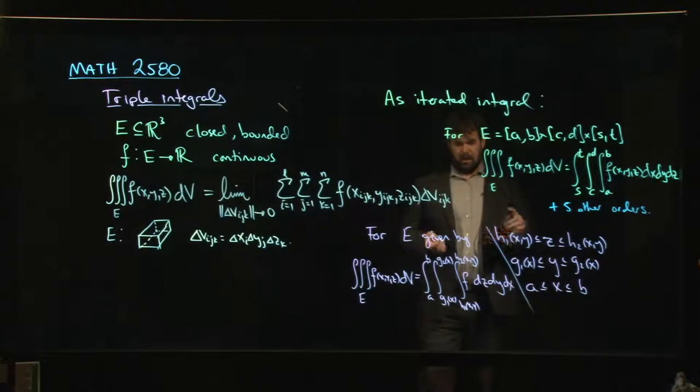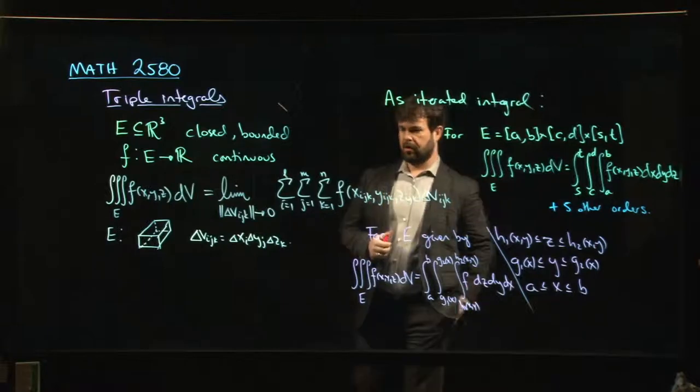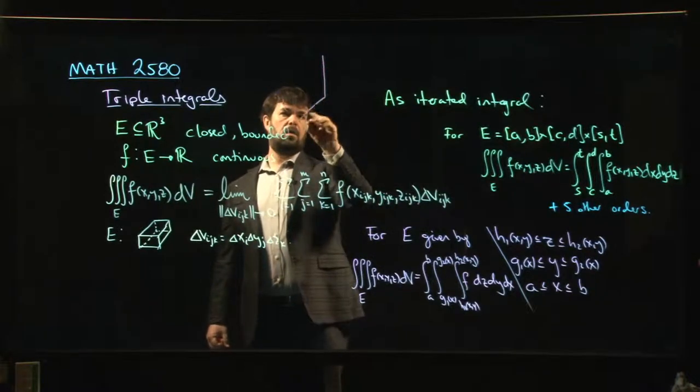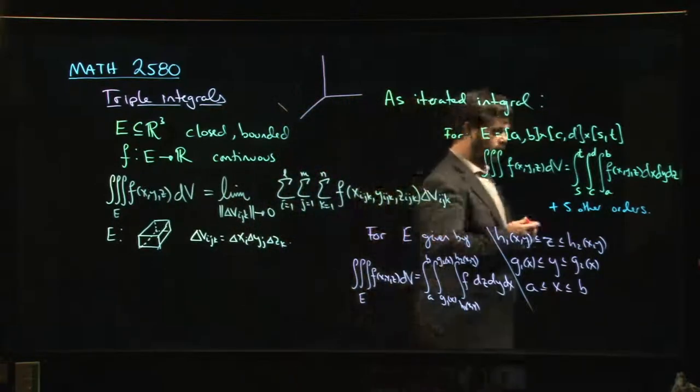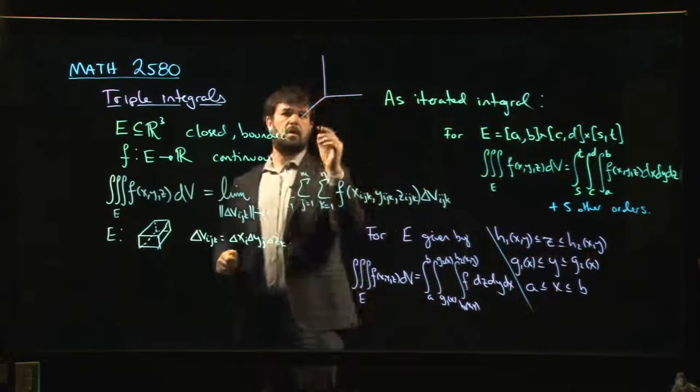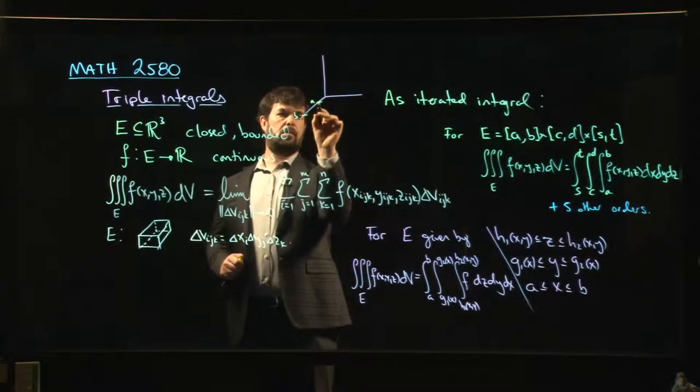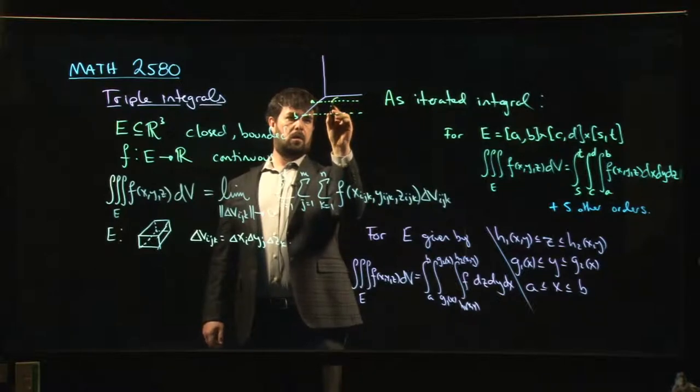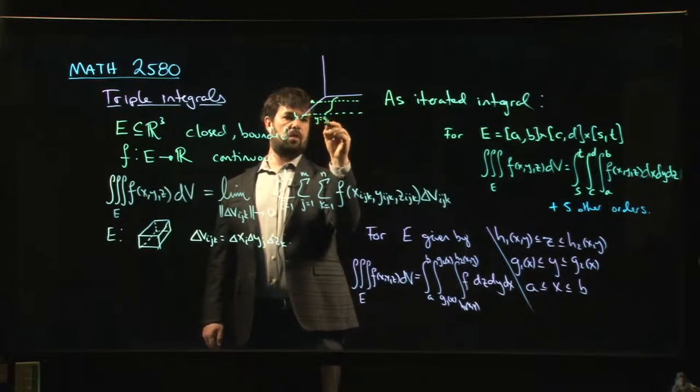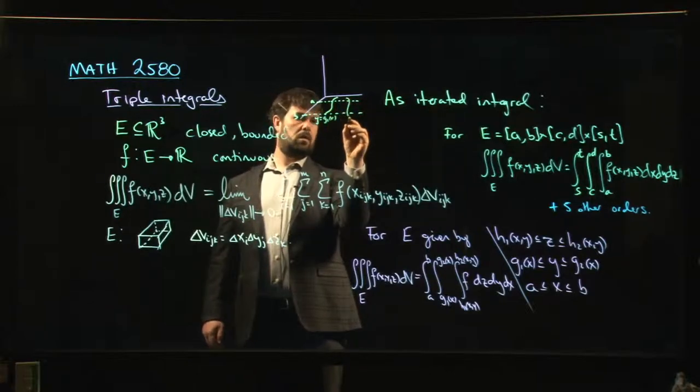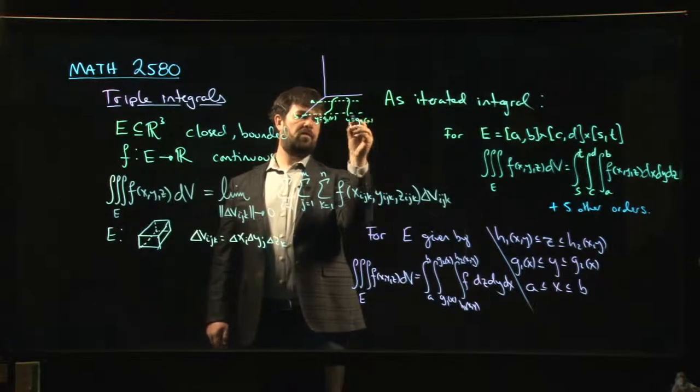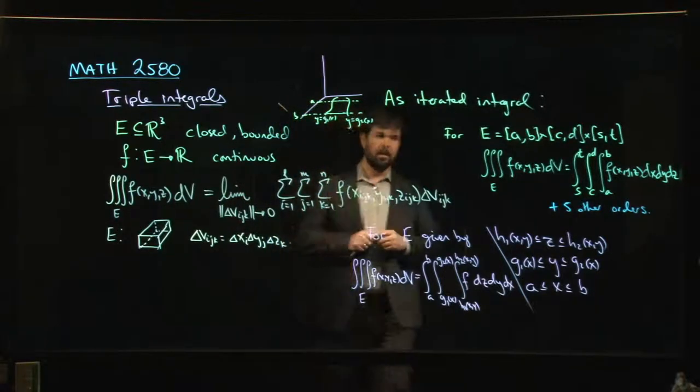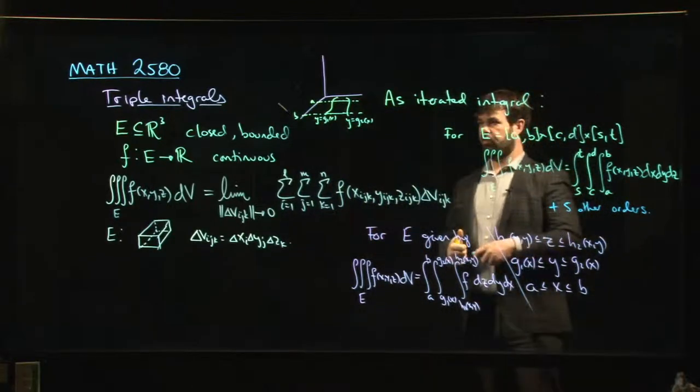So the picture you should have in mind here, this region of integration that you're dealing with is something like the following. So draw some coordinate axes in. Your X is running from A to B. Here's Y equals G₁ of X. Y is equal to G₂ of X. So you can see that region of integration there.